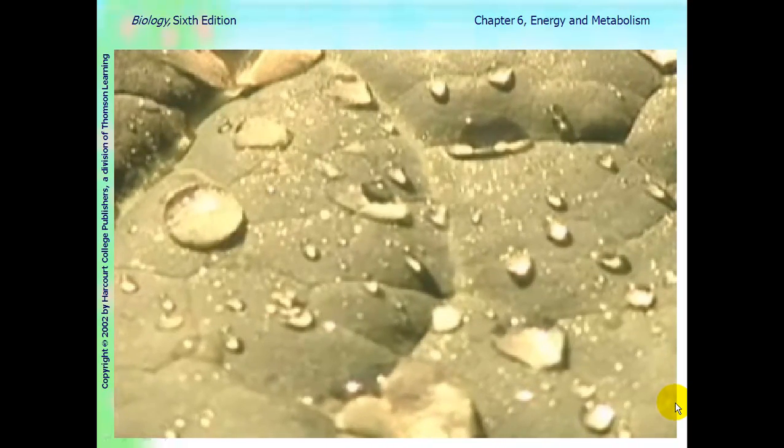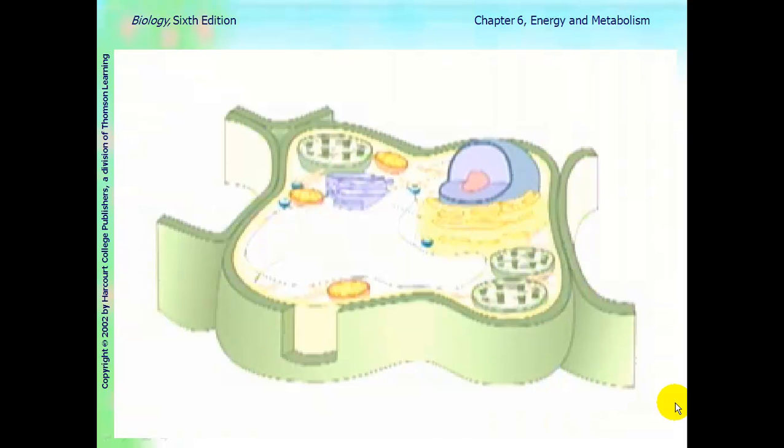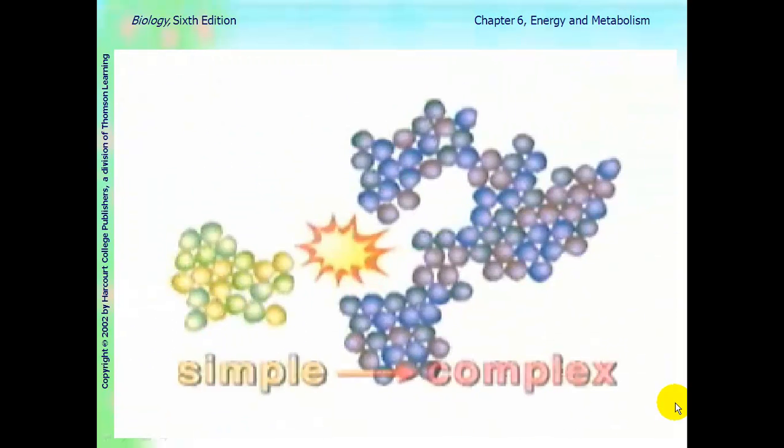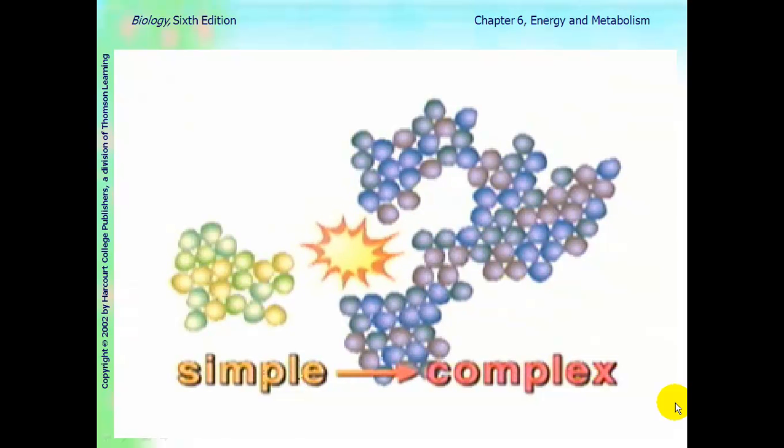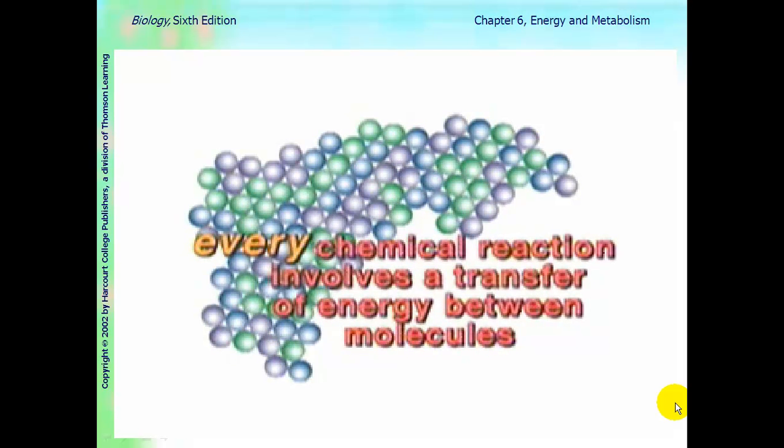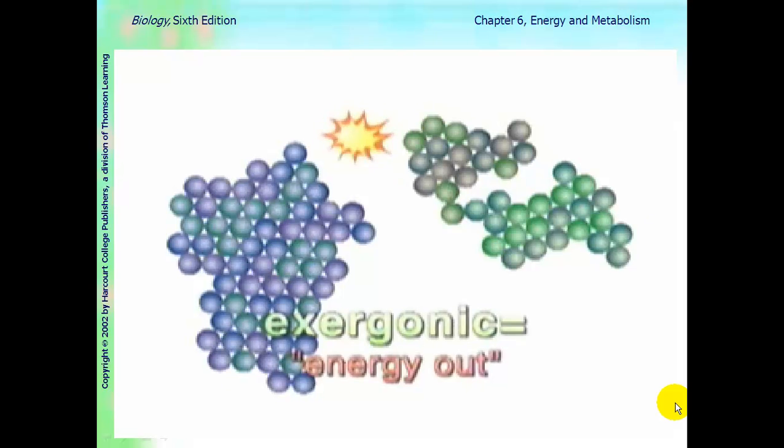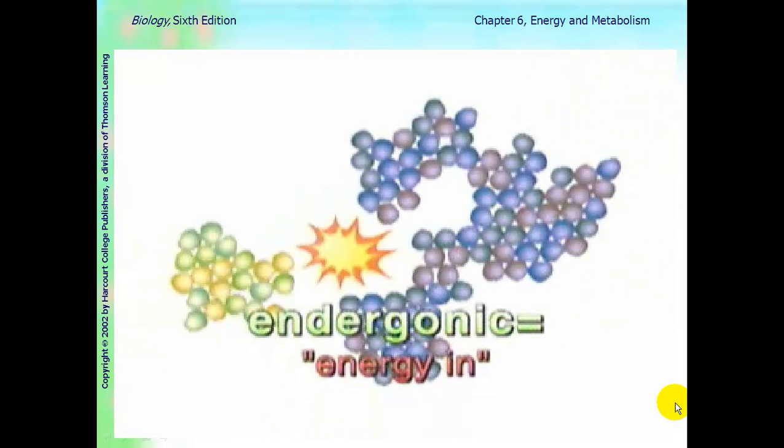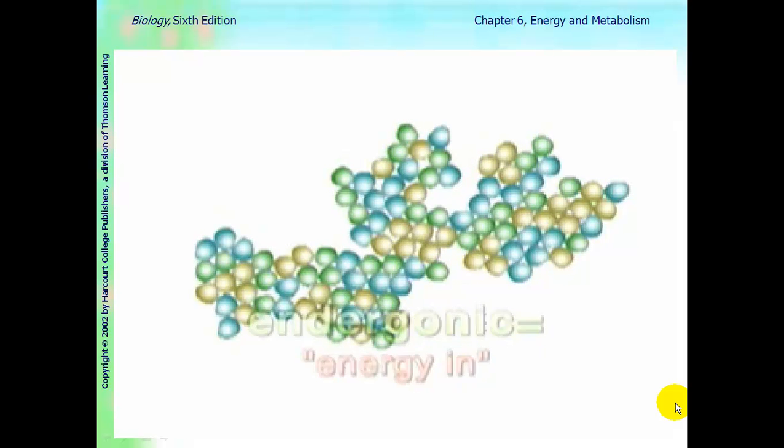The flow of energy within an organism consists of millions of precisely regulated chemical reactions inside the cells. During these chemical reactions, complex molecules are broken down into simpler molecules, or simple ones are built up into more complex molecules. Every reaction involves a transfer of energy between molecules. Reactions that release energy by breaking down chemical bonds are called exergonic reactions, or energy out. And those that consume energy by building chemical bonds are called endergonic reactions, or energy in.